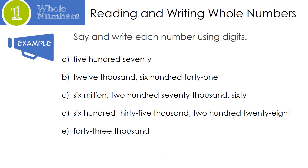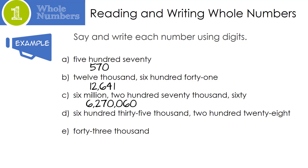Next, we're going to look at how we can say and write each number using digits. Basically, you read it and you write it. So the first one is five hundred seventy: 570. Twelve thousand, six hundred forty-one: 12,641. Six million, two hundred seventy thousand, sixty: 6,270,060. Six hundred thirty-five thousand, two hundred twenty-eight: 635,228. And finally, forty-three thousand: 43,000.